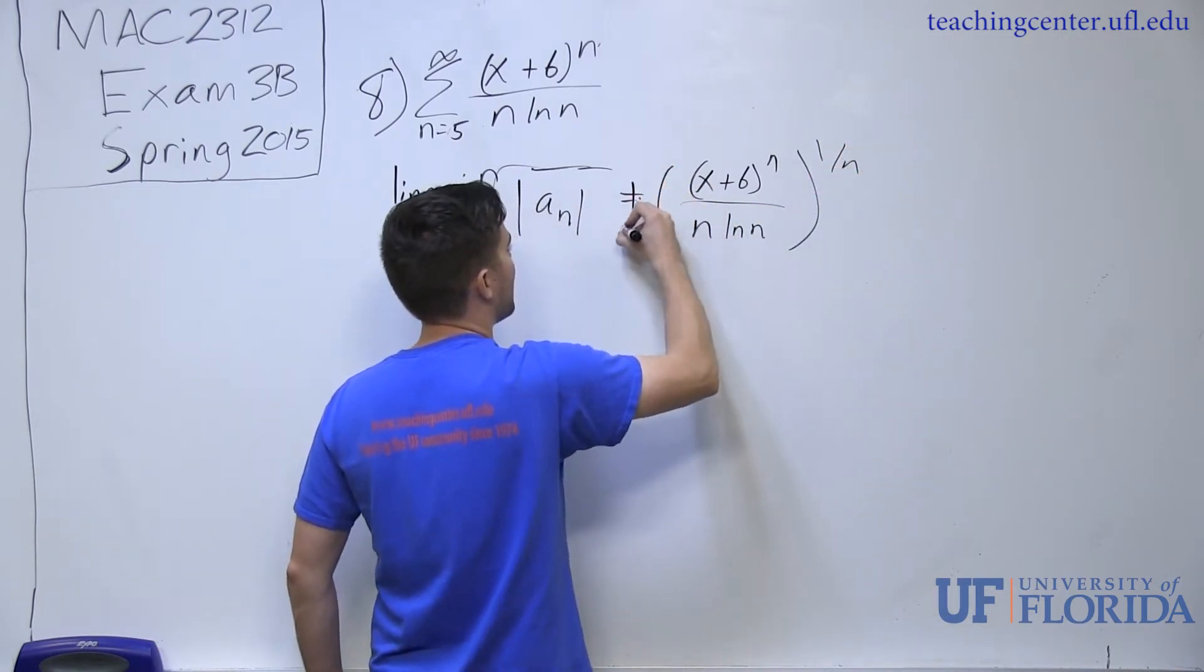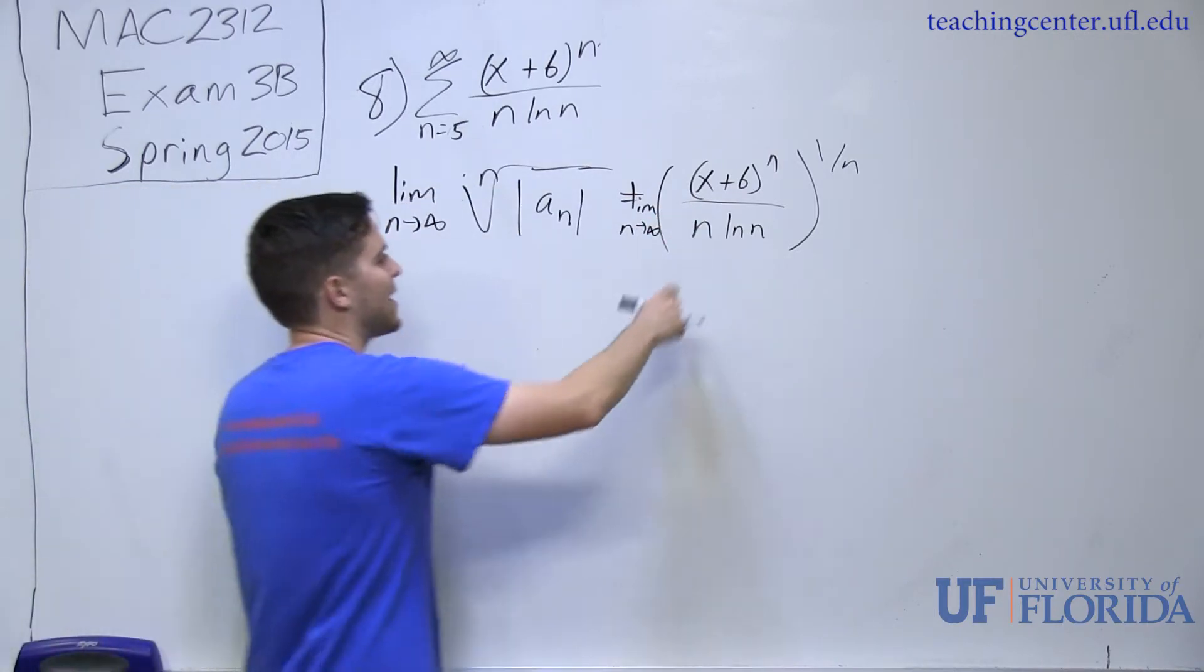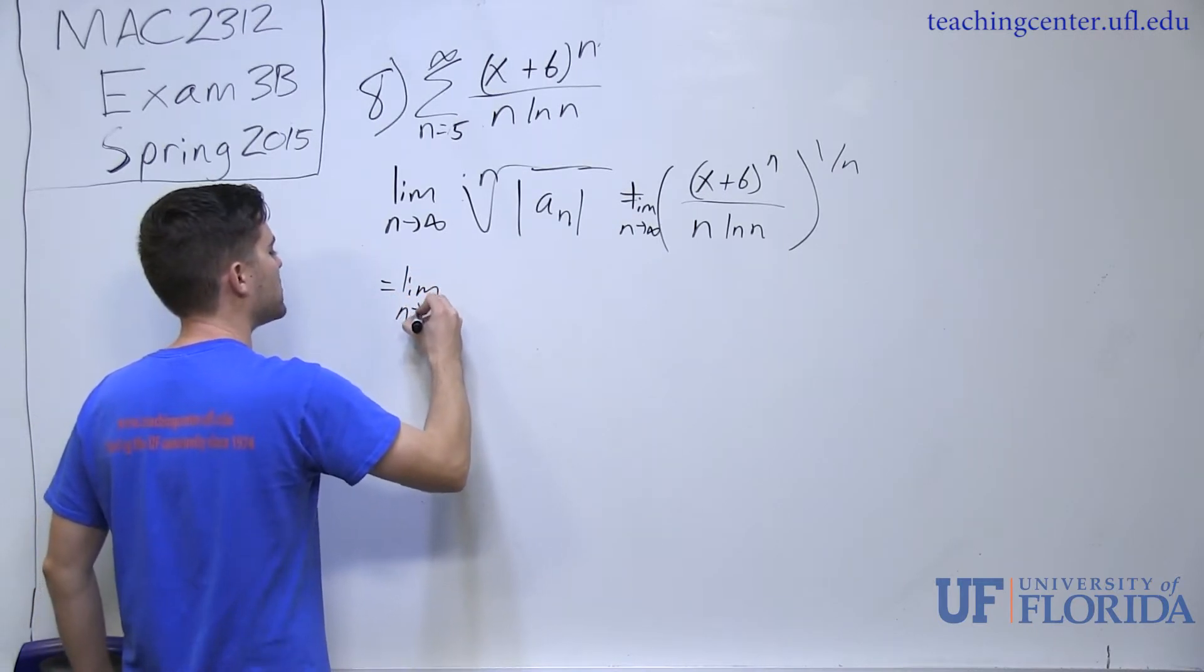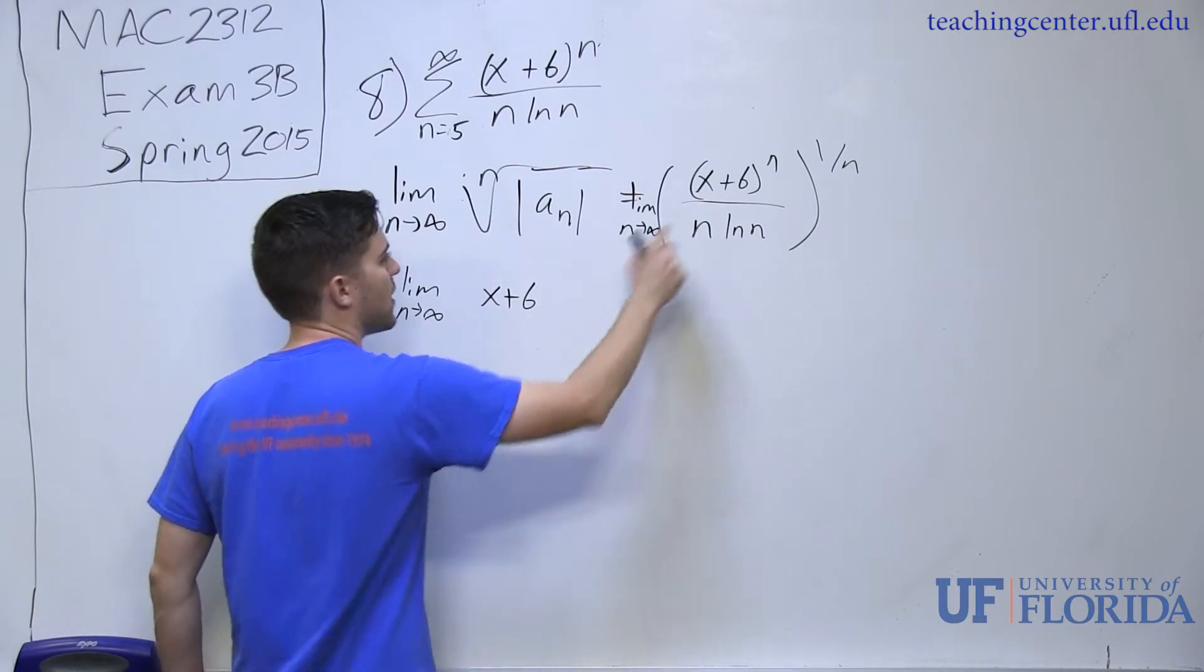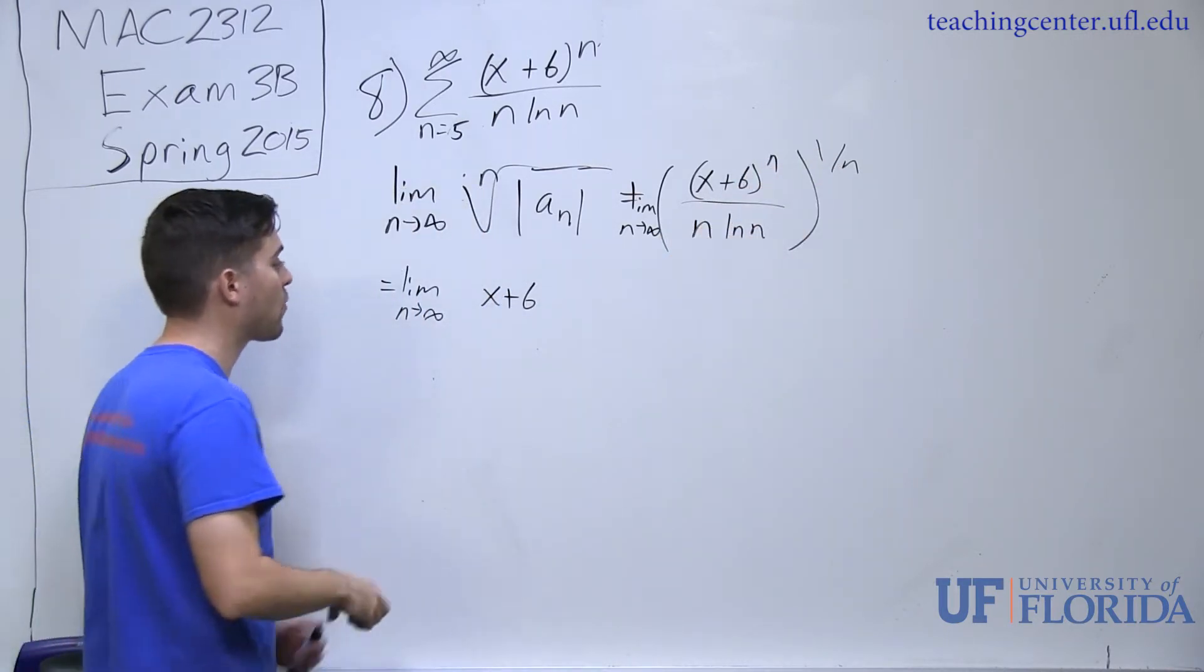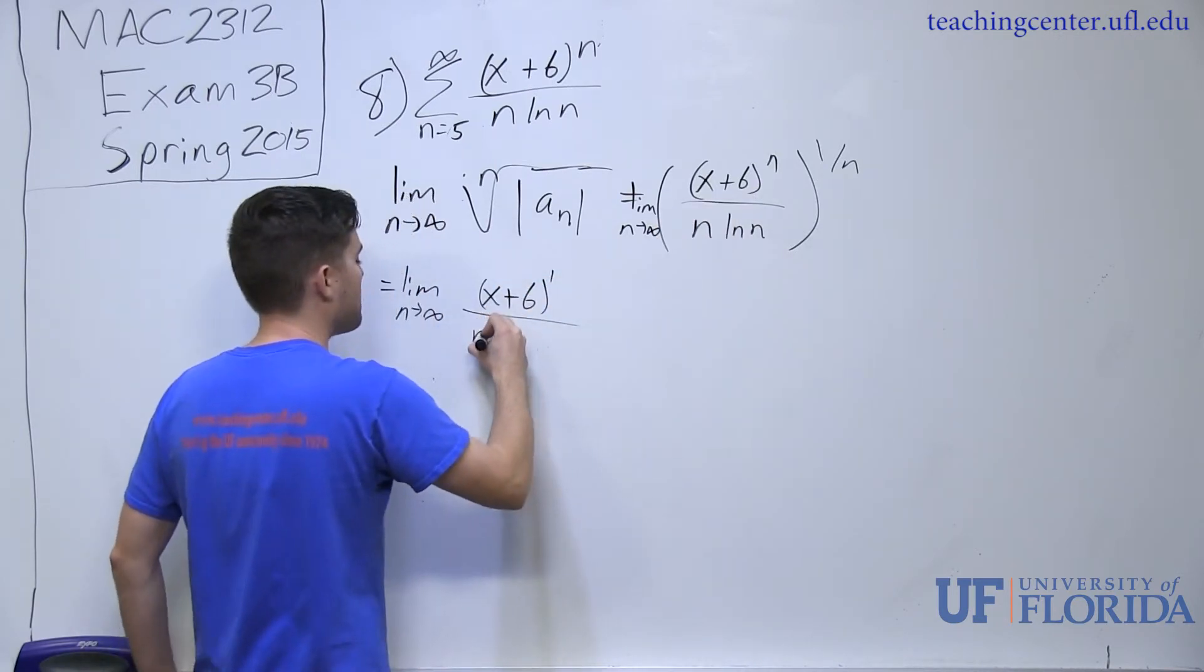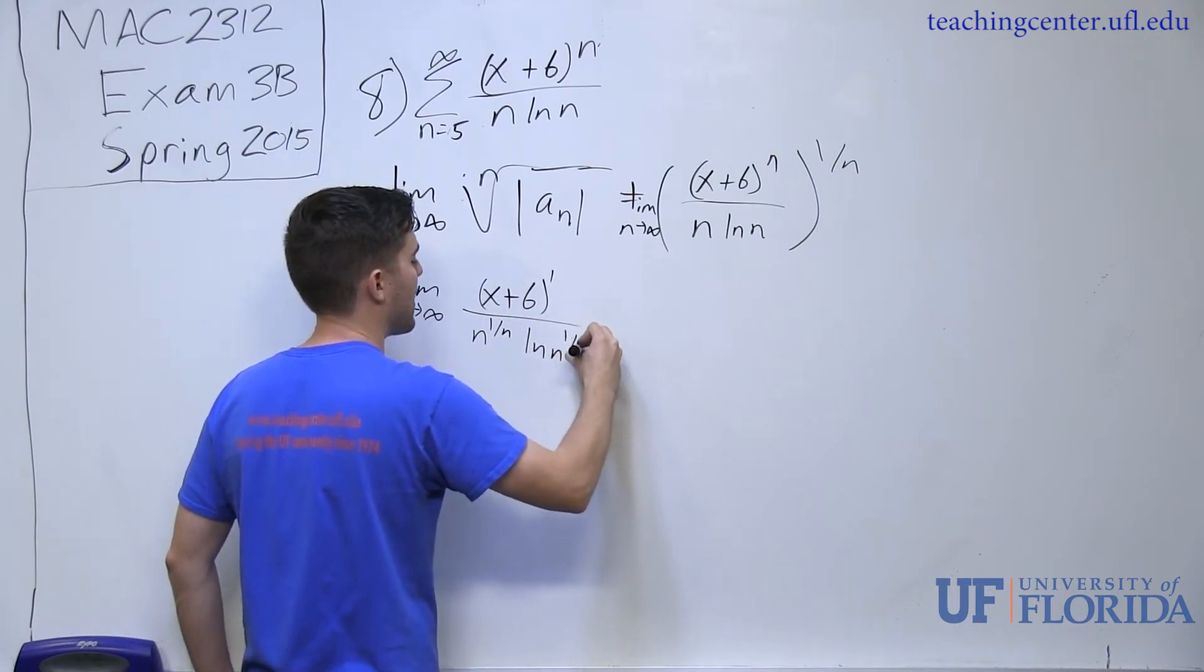I'm taking the limit as n approaches infinity of that term. If I go ahead and I apply this, I end up with the limit as n approaches infinity of x plus 6, n to the 1 over n. That becomes just a power of 1, so this whole thing is now to a power of 1. n to the 1 over n and natural log of n to the 1 over n.